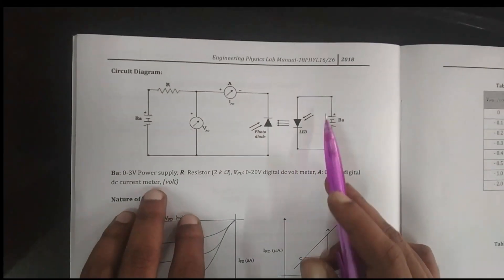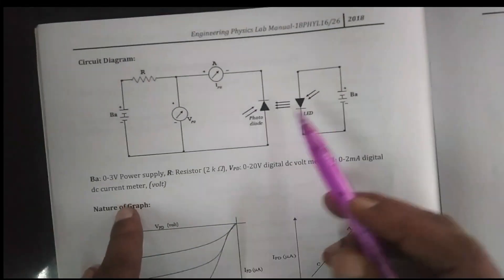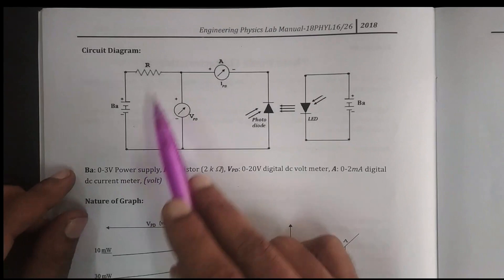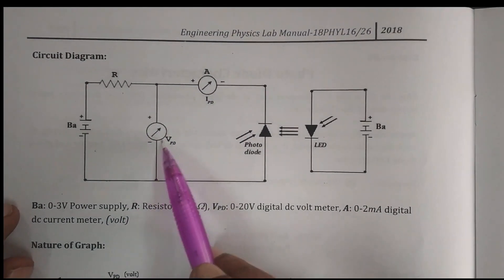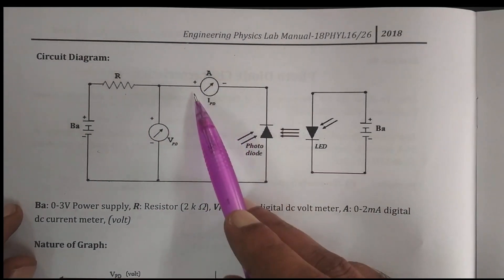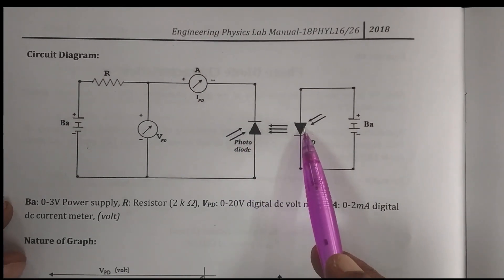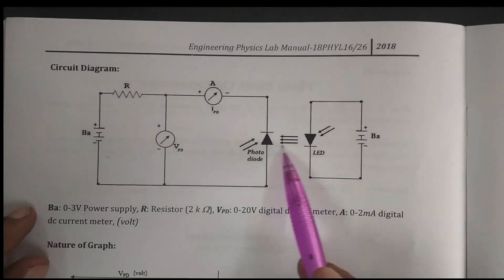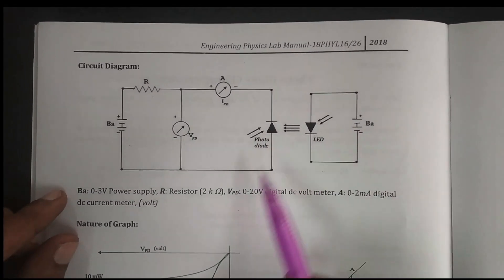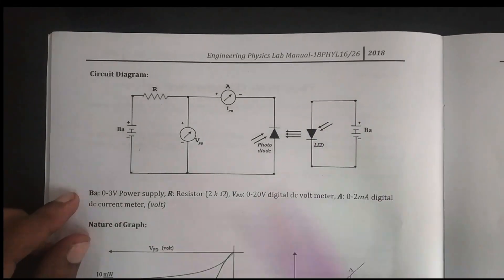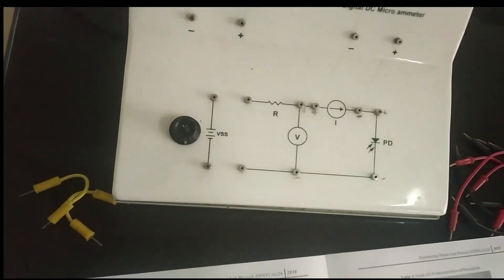This is the circuit diagram used to study the photodiode characteristics. It includes a power supply, one resistor, a voltmeter, and an ammeter. The photodiode receives light energy — photons — incident on it with the help of the LED.